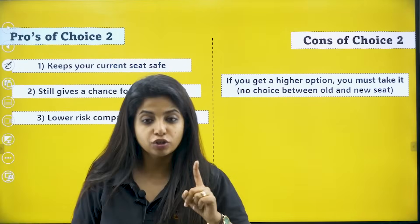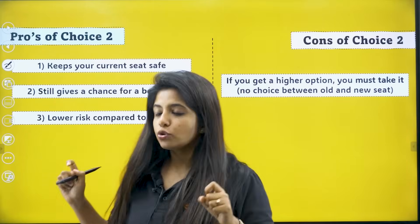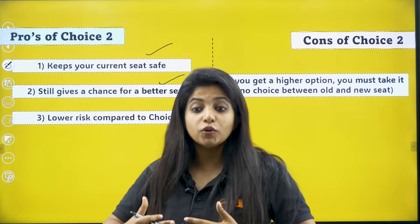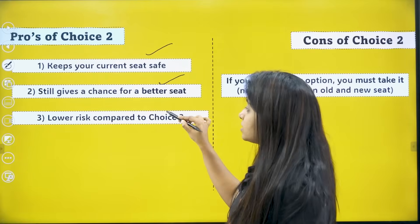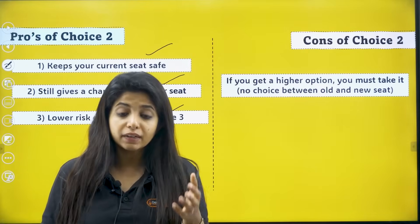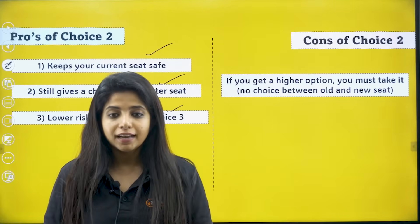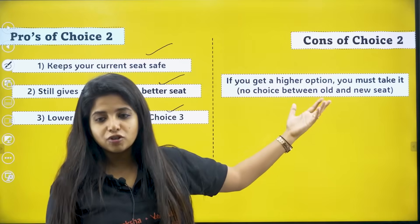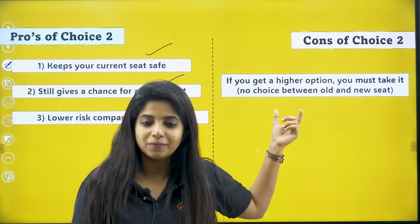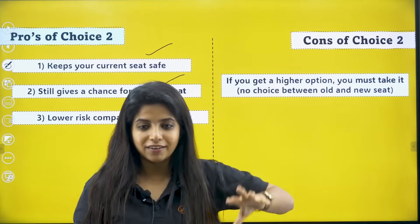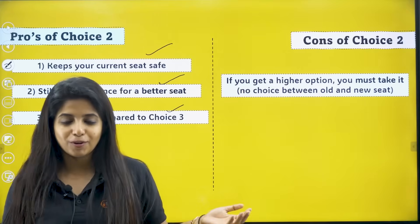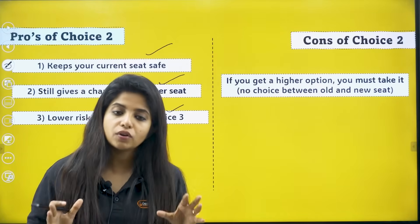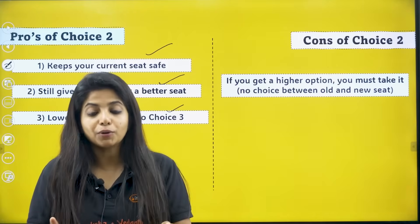Pros of choice two: it keeps your current seat safe, it still gives a chance for a better seat since you are looking for an upgrade, and it lowers the risk compared to choice three. You do have to pay the course fee, but if you are sure you will participate in KCET or KEA counseling, choice two is a good option. Regarding cons: the only issue is that if you get a higher option you must take it, but that is not actually a problem if your options list is set up correctly. There are really only pros to choice two, as long as you make sure every college you list is one you are willing to join.